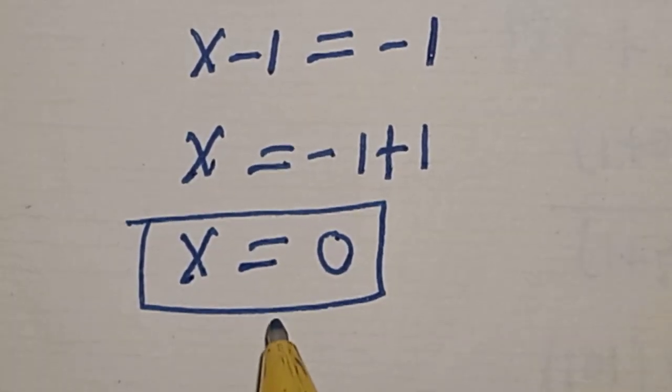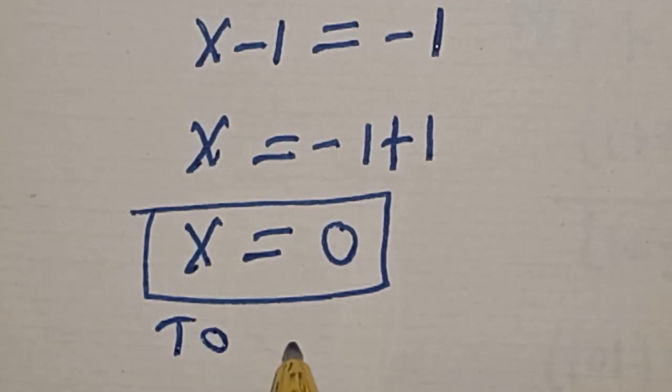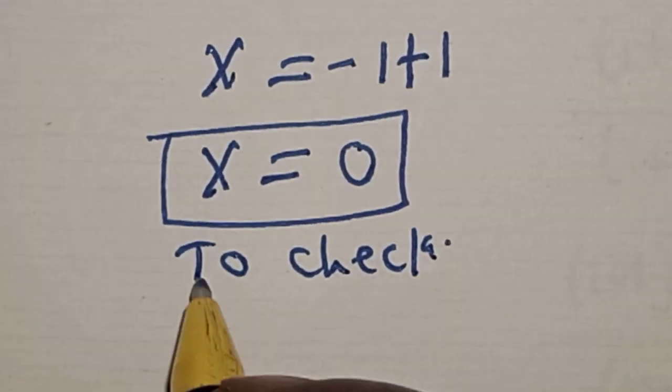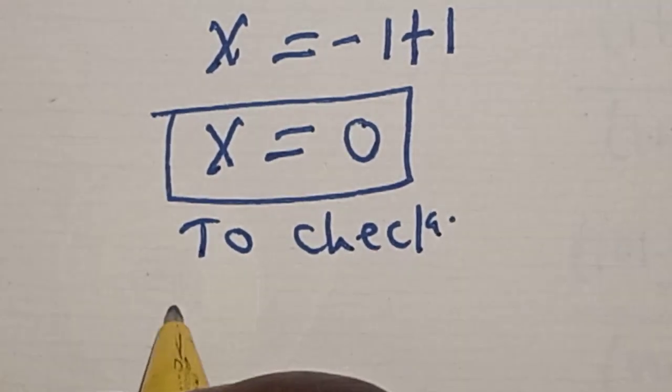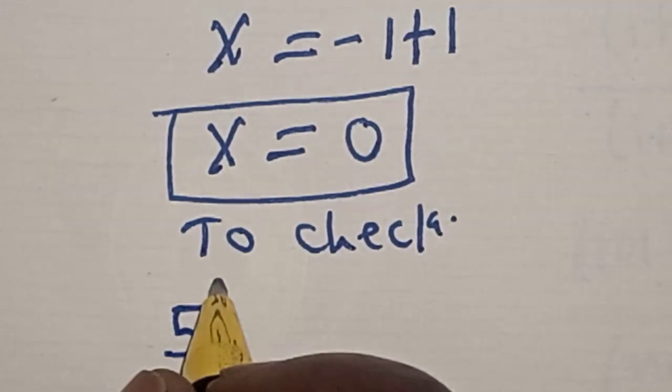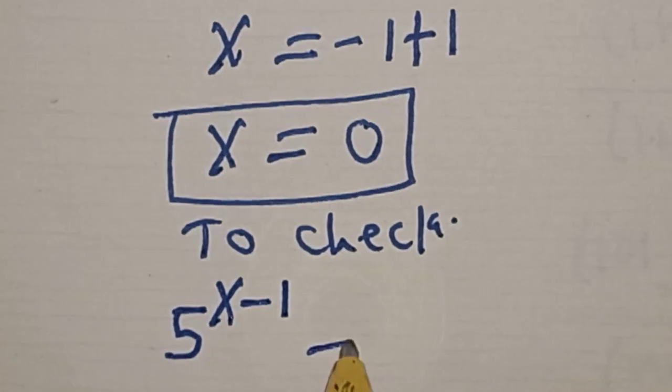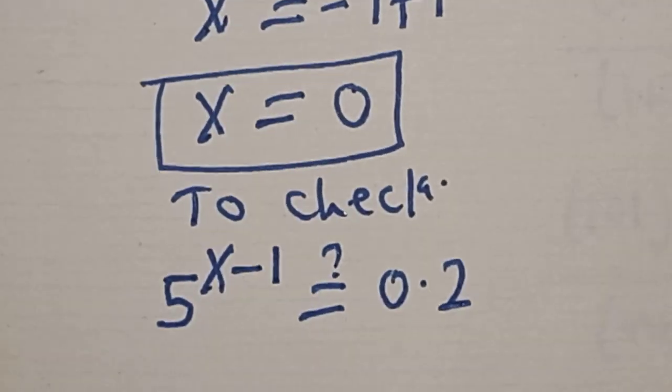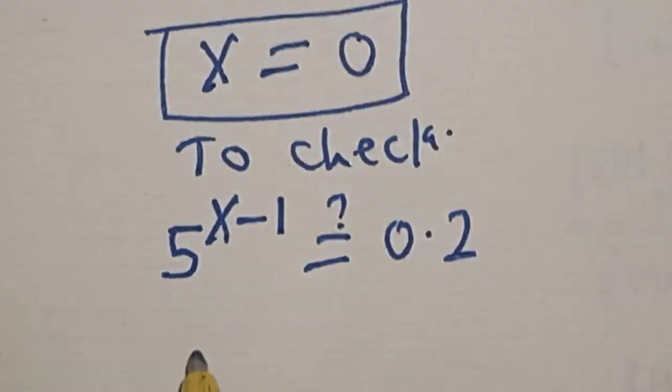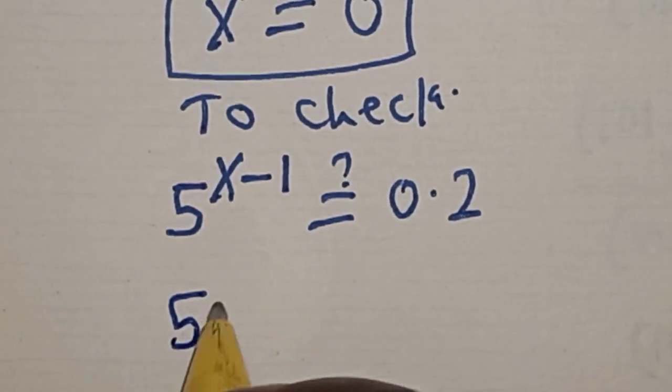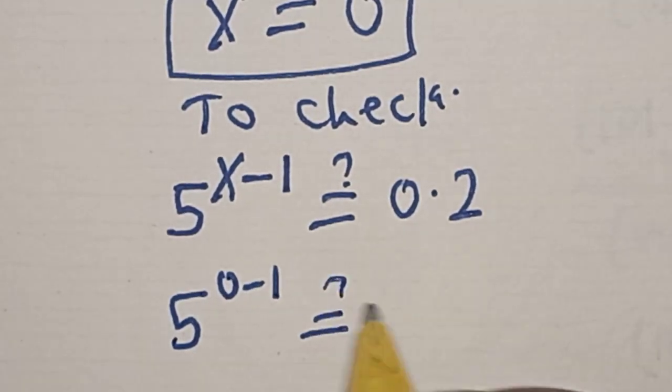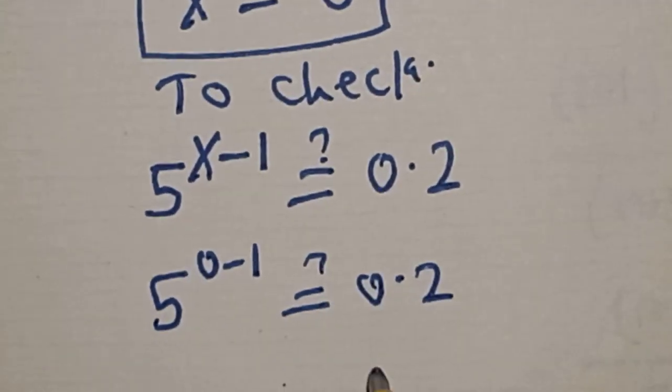To check, this is the given question: 5 raised to power x minus 1 must be equal to 0.2. At x equal to 0, 5 raised to power 0 minus 1 must be equal to 0.2.